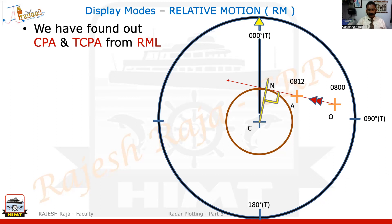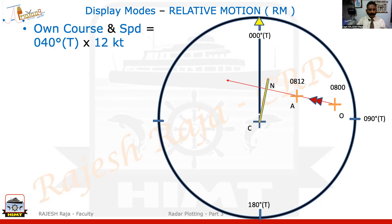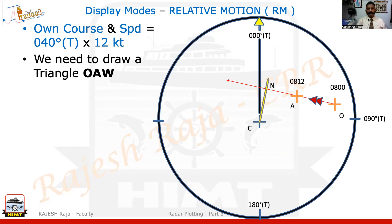Let us go to the next data we can get from the plotting. The question already gave us our own course, which is 040 at 12 knots. We need to draw a triangle called OAW — you can call it WOA, whatever it is. I'm just calling it the OAW triangle.